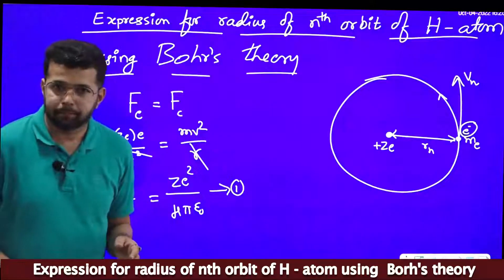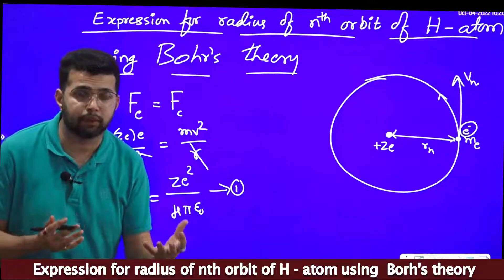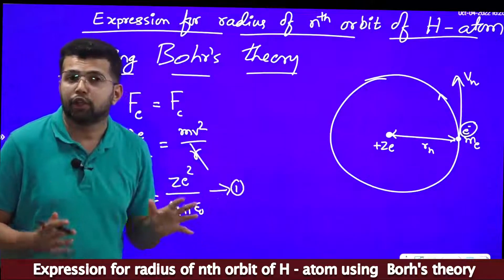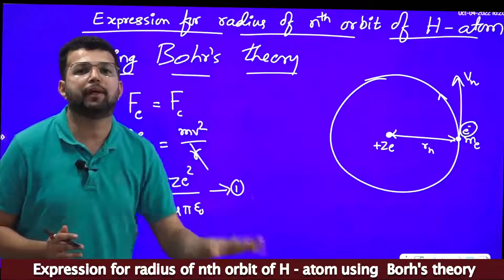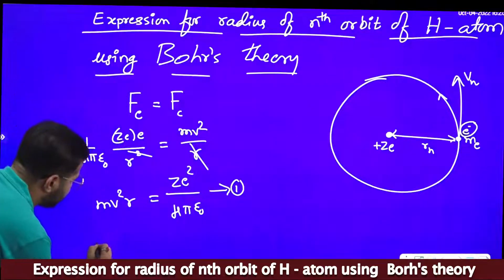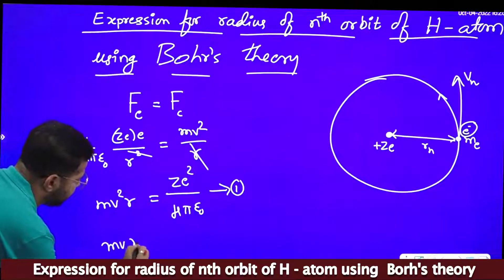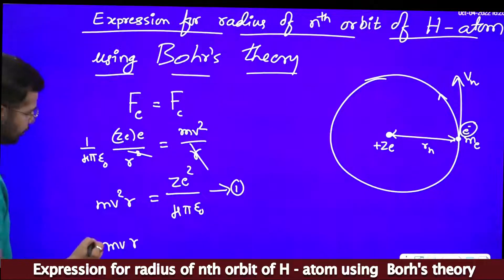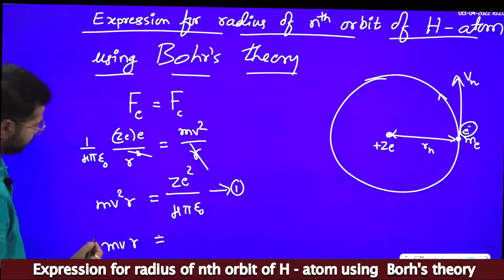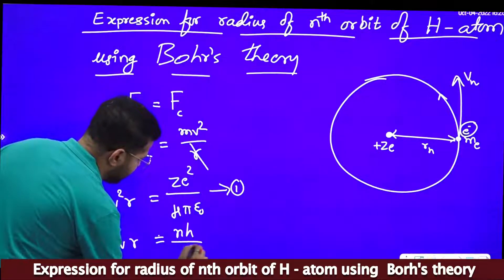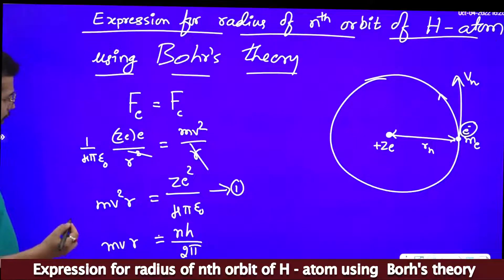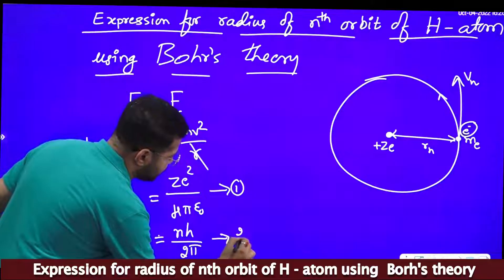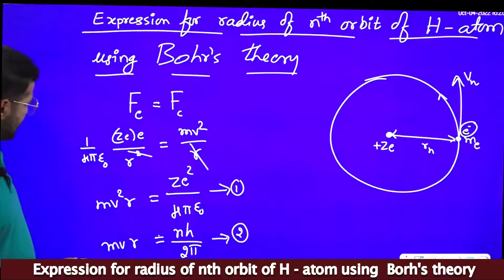Now we apply Bohr's theory. According to Bohr's second postulate, the angular momentum of the electron revolving around the nucleus must be an integral multiple of h/2π. So the angular momentum mvr equals nh/2π, where n is the orbit number. We name this Equation 2.